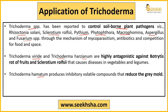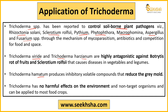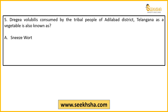Trichoderma hamatum releases an inhibitory volatile compound that helps control grey mold. The best thing about Trichoderma is that it has no harmful effect on the environment, and it does not impact non-target organisms either. Multiple questions can be formed from this — for example, which specific Trichoderma species to use against Botrytis rot of fruit, with options like harzianum, hamatum, and viride.